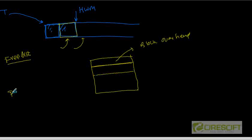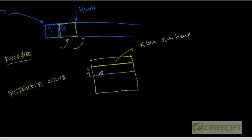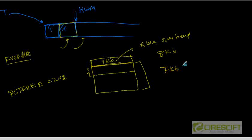Essentially, PCT-free is a parameter that tells how much space should be reserved for future updates. For example, if PCT-free is 20 percent, that means in a new block, 20 percent of the space in the block is left unused. So if this is a new block, and let's assume the block size is 8 kilobytes, I am going to allocate 1 kilobyte for the overhead. That means I have 7 kilobytes remaining. 7 kilobytes times 20 percent is 1.4 kilobytes.